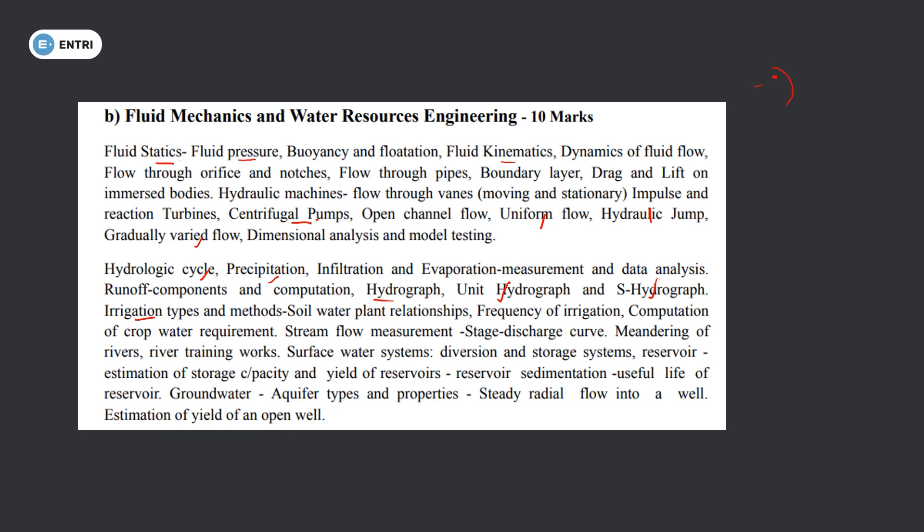Surface water systems: diversion, storage, reservoir, reservoir storage capacity, yield, reservoir sedimentation, and useful life of reservoir. Ground water: aquifer types and properties, steady radial flow into a well, estimation of yield of an open well. This completes the second subject — Fluid Mechanics and Water Resources Engineering — worth 10 marks.